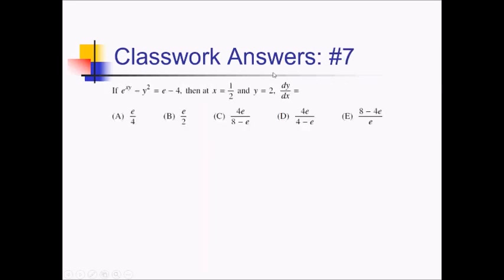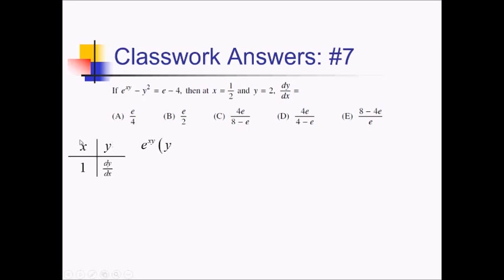On this problem, I'm trying to find the derivative of this equation at x equals one half and y equals 2, using implicit differentiation — there's no way to isolate y otherwise. Going left to right, the derivative of e to the xy requires a chain rule with a product rule inside it. The outer derivative gives e to the xy, then the product rule on x times y using the box and ribbon: I have x and y with derivatives 1 and dy over dx respectively. Multiplying out: parentheses with y plus x times dy over dx.